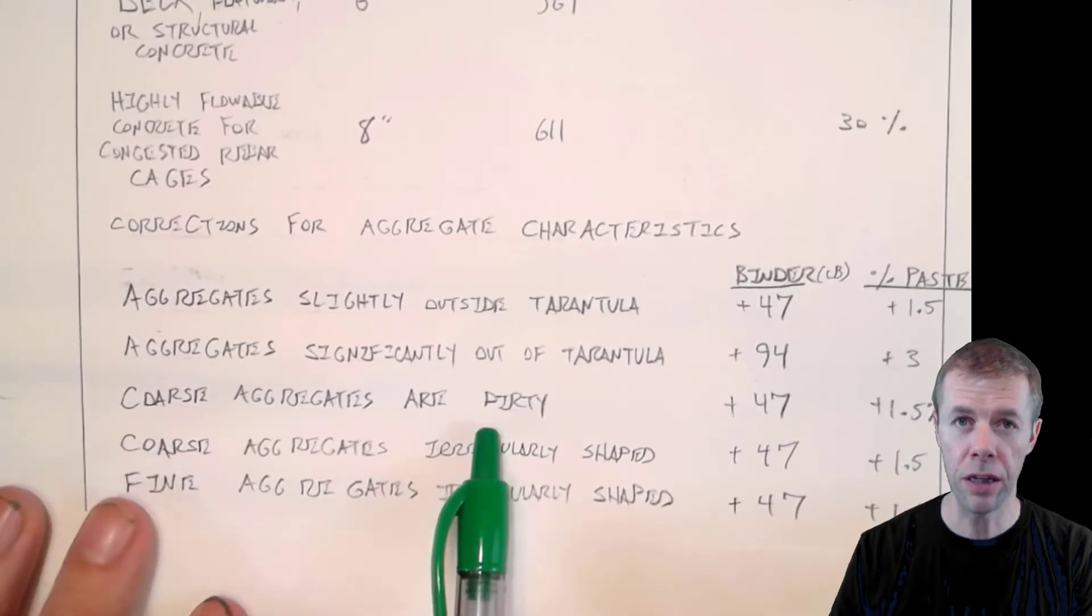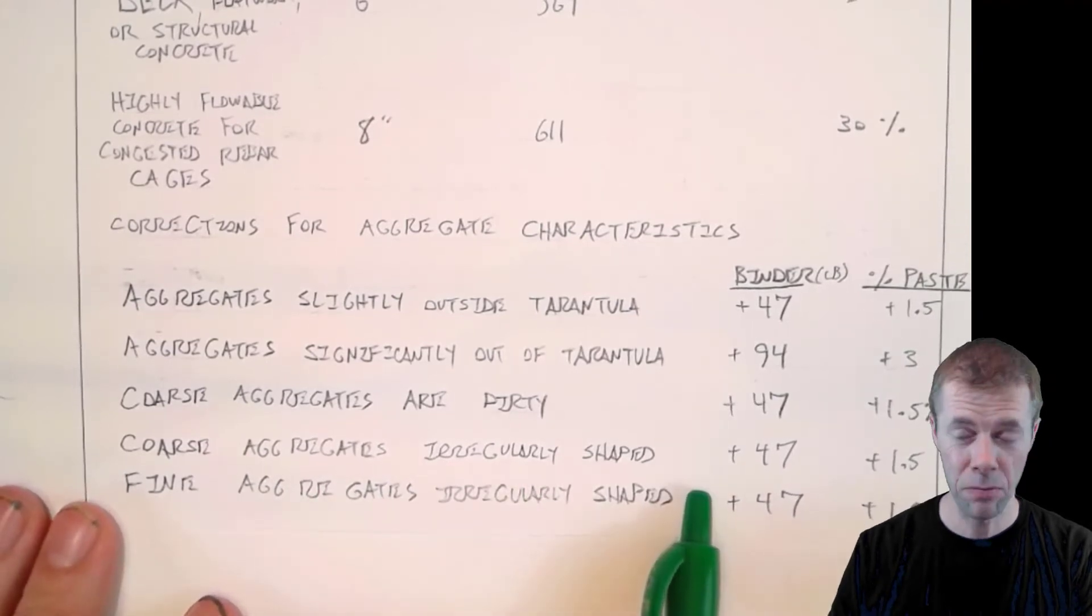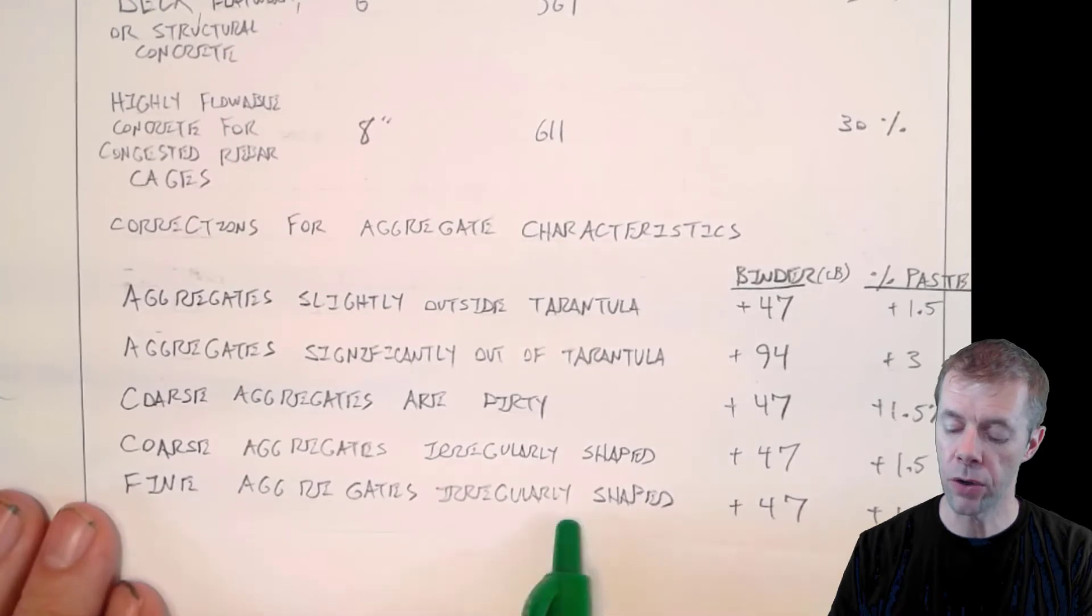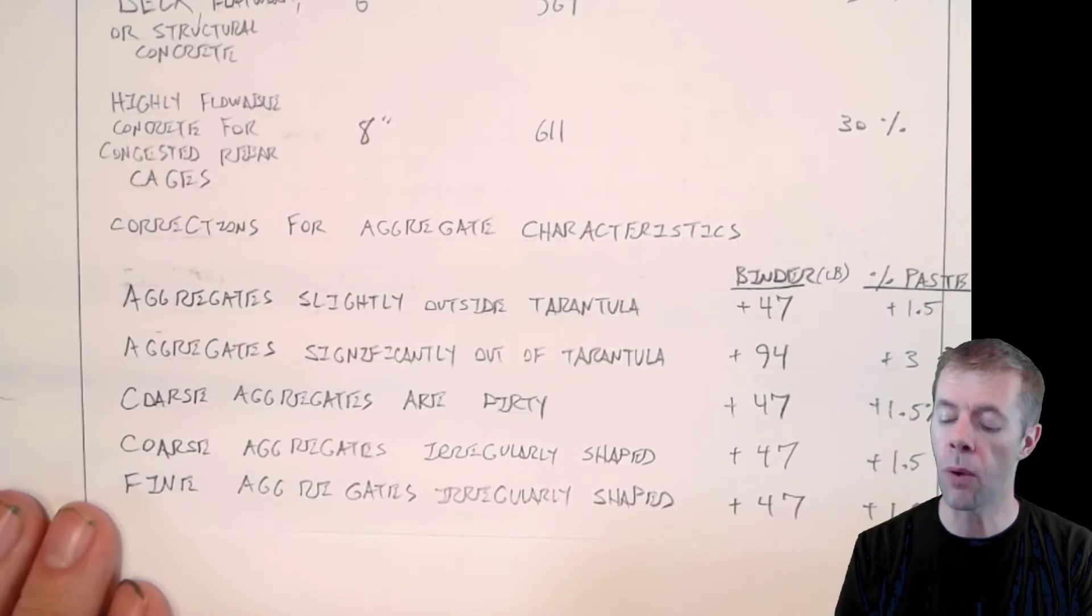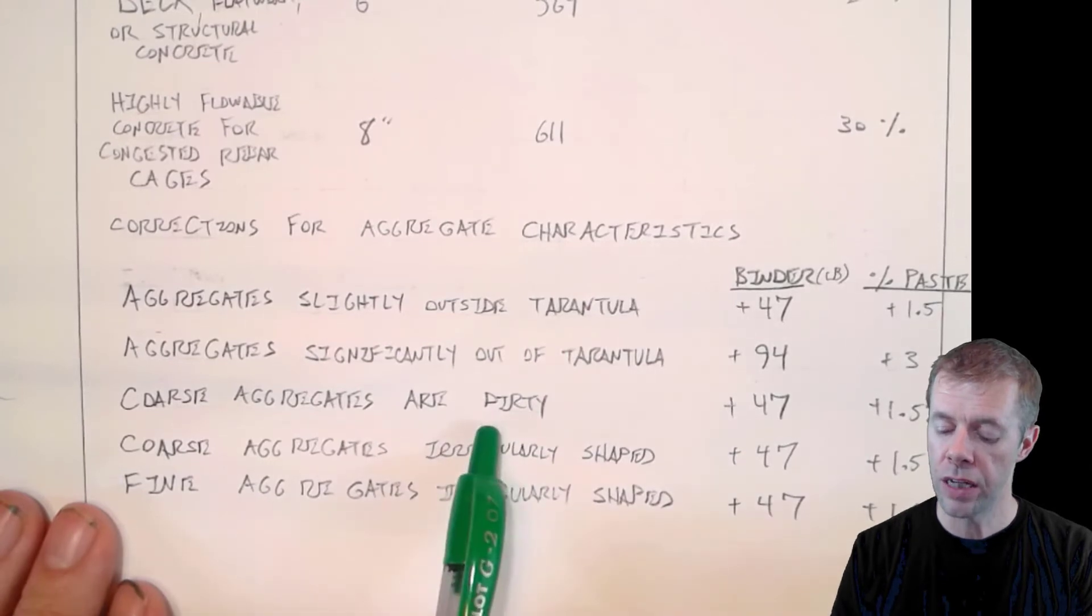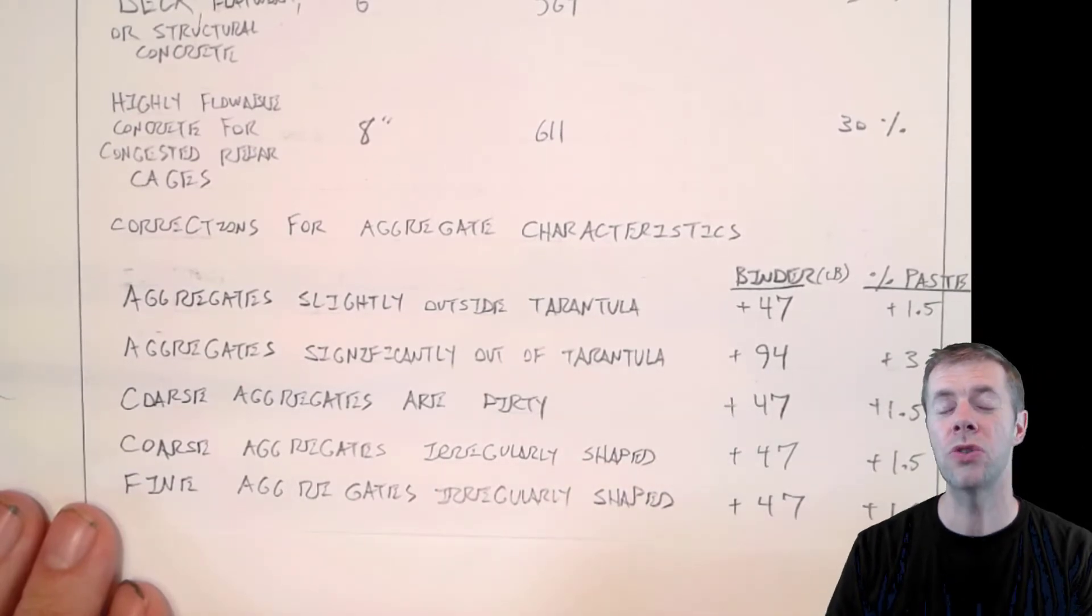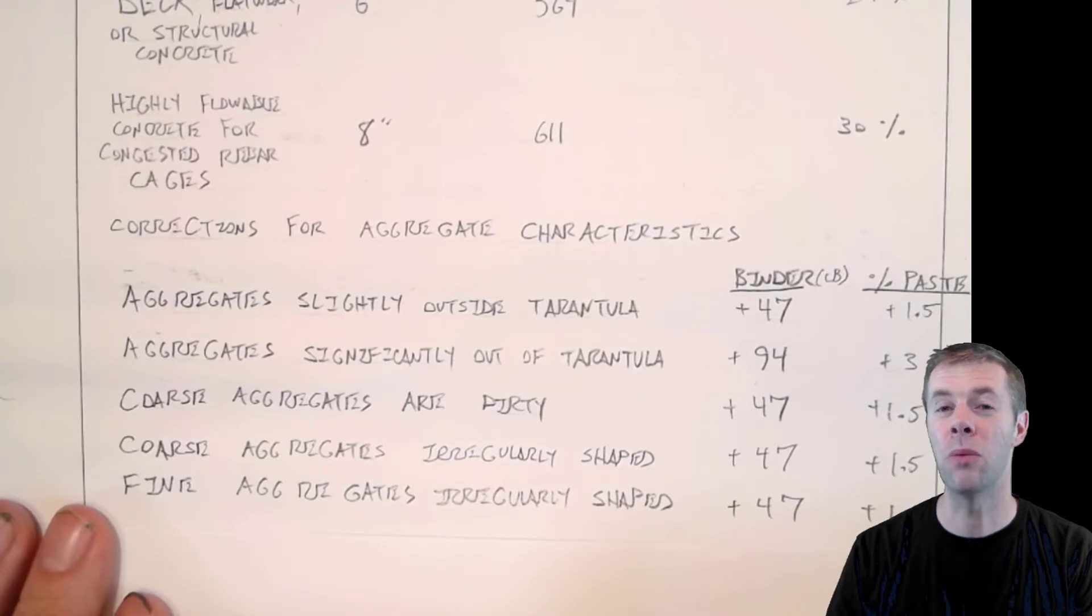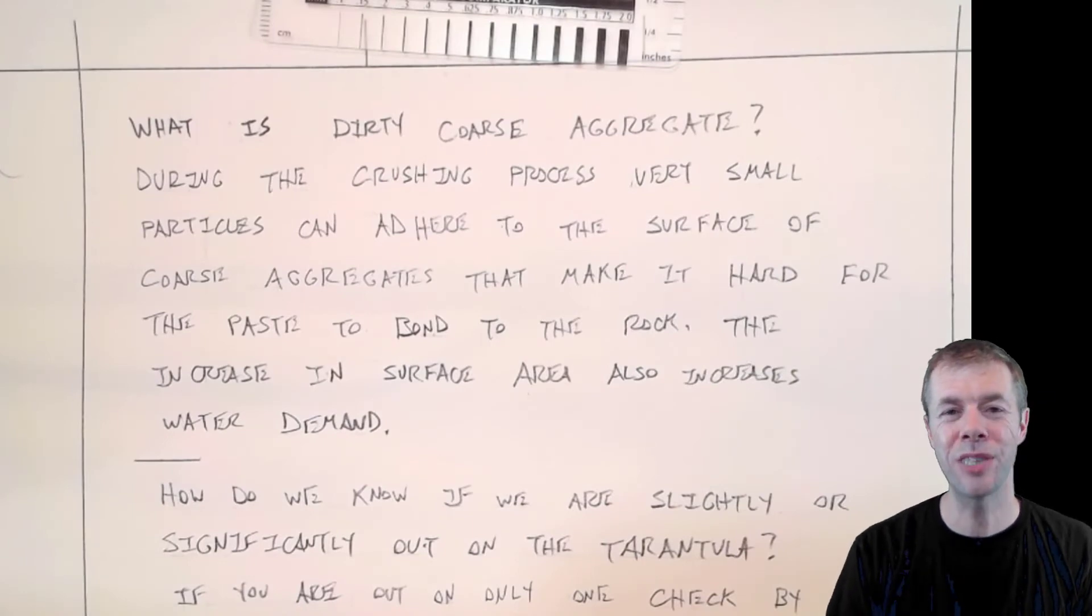And let's say you have aggregates that are dirty, that's another half a sack. If you have coarse aggregates that are irregularly shaped, that's another half a sack. If you have fine aggregates that are irregularly shaped, that's another half a sack. So what this means is that you start out with this idealized perfect aggregate, and if it's not right, you start adding these up. If you've got a dirty aggregate that happens to be irregularly shaped, that happens to be outside the Tarantula Curve, you're going to add two sacks more, or 188 pounds more of cementitious material to this mixture. This just shows you these aggregate things are really important. They cost you money when they're not right.